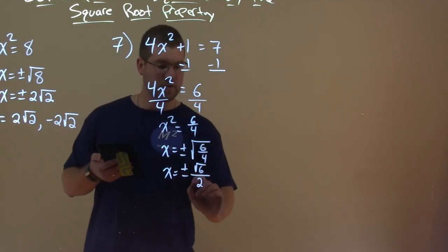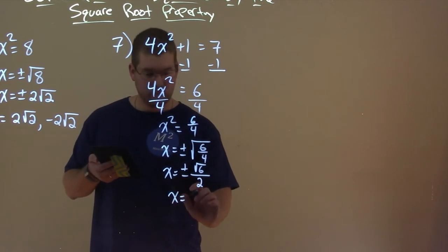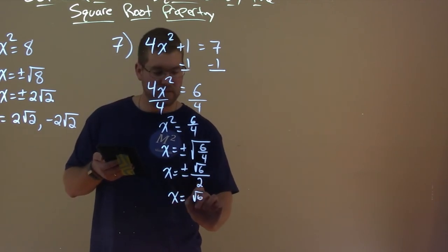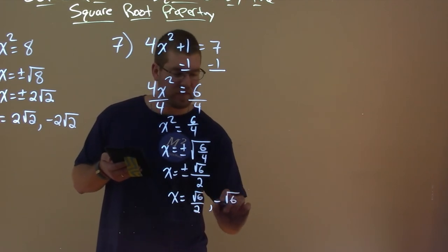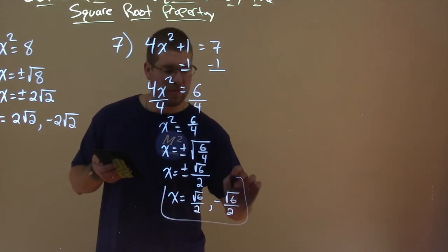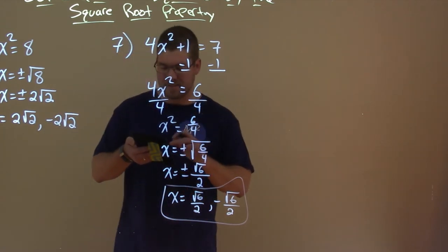And now we're kind of done. We have our two values. x equals square root of 6 over 2, and negative square root of 6 over 2. Again, that's what that plus and minus means.